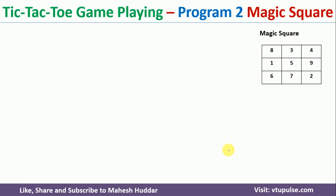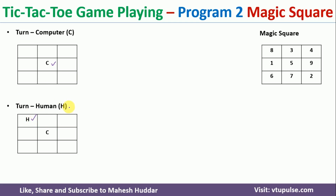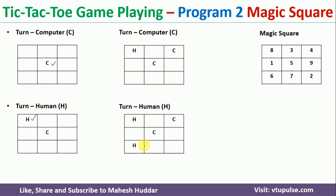Now let us walk through a complete example using the magic square. The computer plays its first turn on an empty board. The human plays a turn, then the computer plays a second move, and the human plays again. Now that both have played 2 turns each, we check whether the computer is winning. If so, that is final; if not, we check whether the human is winning and block if needed.